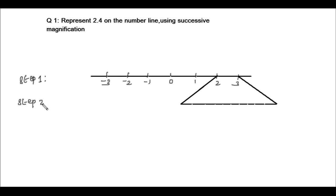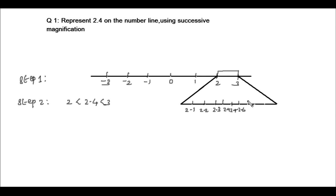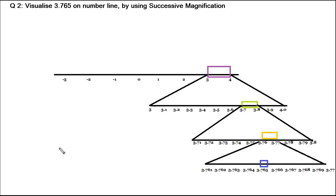In step 2, we identify where the given number lies. In this case, 2.4 lies between 2 and 3, so let's focus on the portion between 2 and 3 and divide it into 10 equal parts: 2.1, 2.2, 2.3, 2.4, 2.5, 2.6, 2.7, 2.8, 2.9, and 3. From this we can locate 2.4 on the number line.